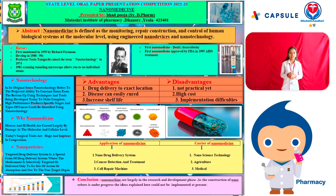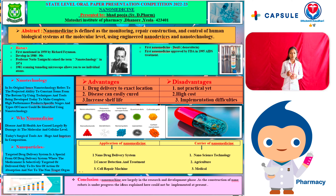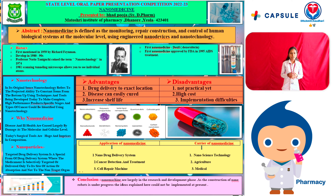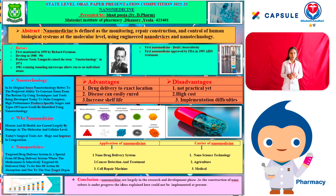Nanomaterials are derived from three categories: one dimension, two dimension, and three dimension. One dimension — for example, layers and surface coatings. Two dimension — for example, nanotubes and nanowires. Three dimension — for example, nanoparticles.